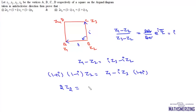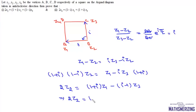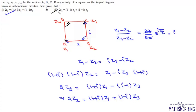Multiplying both sides by 1 plus iota, we get 2z2 equals 1 plus iota times z1 plus minus iota minus 1 times z3, which simplifies to 2z2 equals 1 plus iota times z1 plus 1 minus iota times z3. This is what we needed to prove. Using the same rotation for the other two vectors yields the second result.